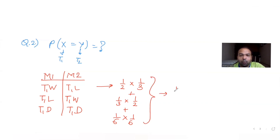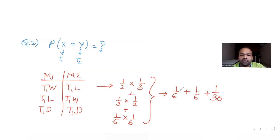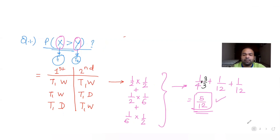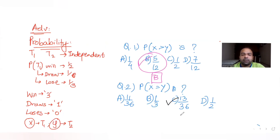Calculating the probabilities: Case 1 — (1/2) × (1/3) = 1/6. Case 2 — (1/3) × (1/2) = 1/6. Case 3 — (1/6) × (1/6) = 1/36. Total: 1/6 + 1/6 + 1/36 = 6/36 + 6/36 + 1/36 = 13/36. So the answer for the second part is option C.